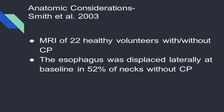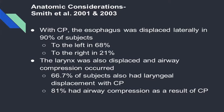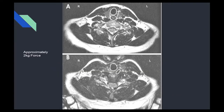A study by Smith in 2003 looked at esophageal anatomy via MRI with and without cricoid pressure. At baseline, in 52% of people the esophagus is already displaced laterally without cricoid pressure. With cricoid pressure, it's displaced laterally in 90% of patients — about two-thirds of the time to the left, the other third to the right. The larynx can also be displaced, and they saw evidence of airway compression. In the MRI image you can actually see the person's fingers pressing down from above.